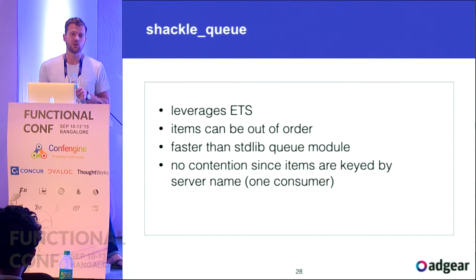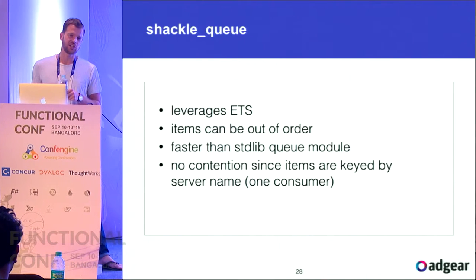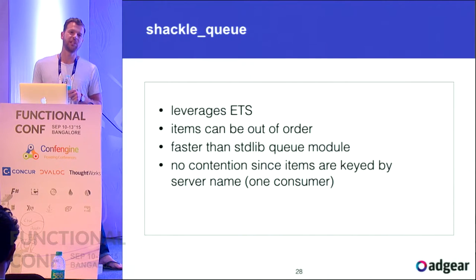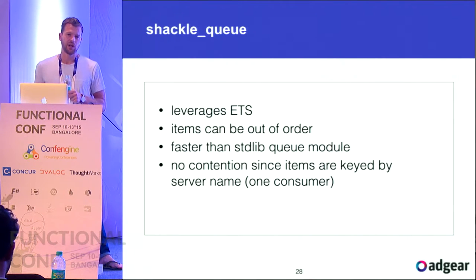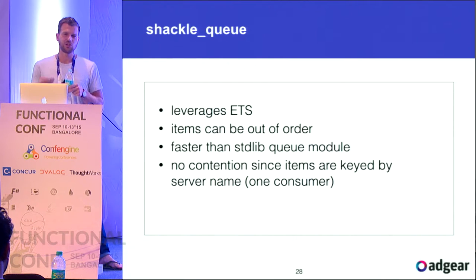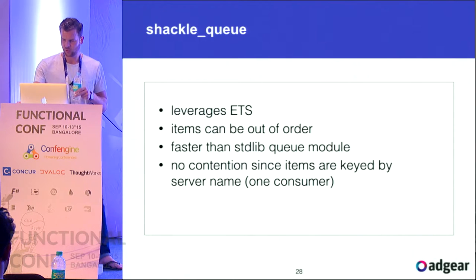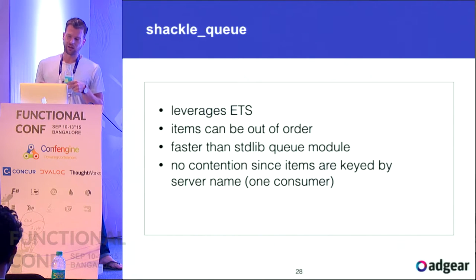IO lists are a special data type you can send to an IO device and it gets serialized on the socket inside the VM at the C level. It's a list that can contain binaries or other IO lists. The benefit is you can use IO lists of binaries without appending them together, avoiding memory reallocation for a new binary.